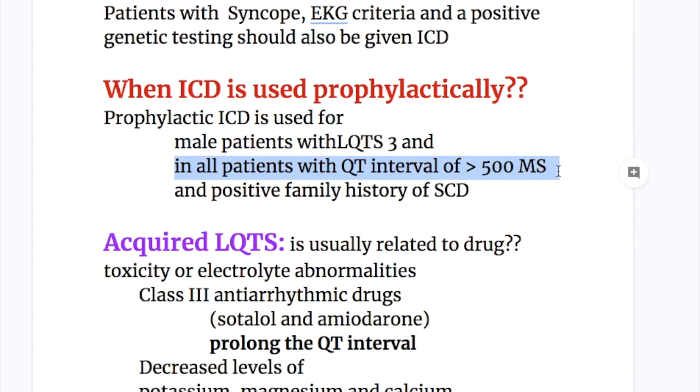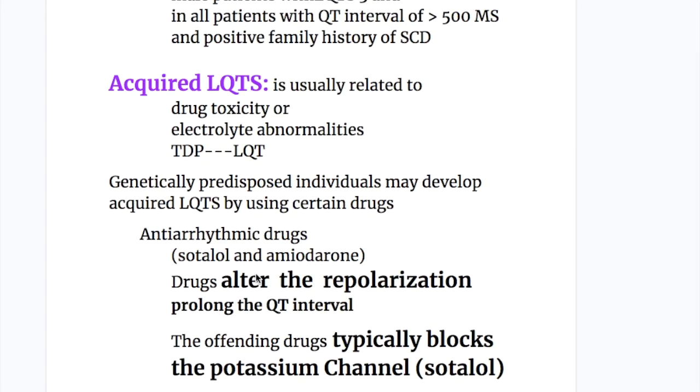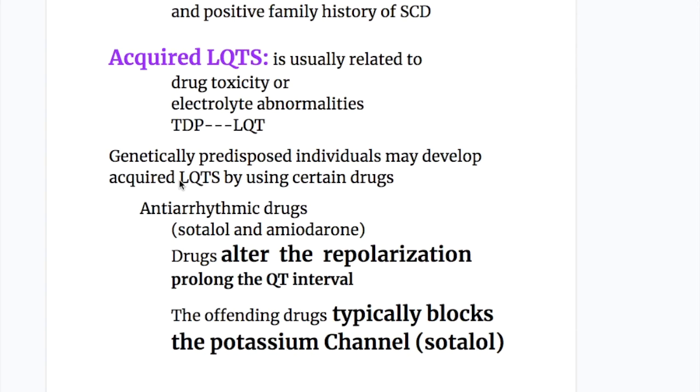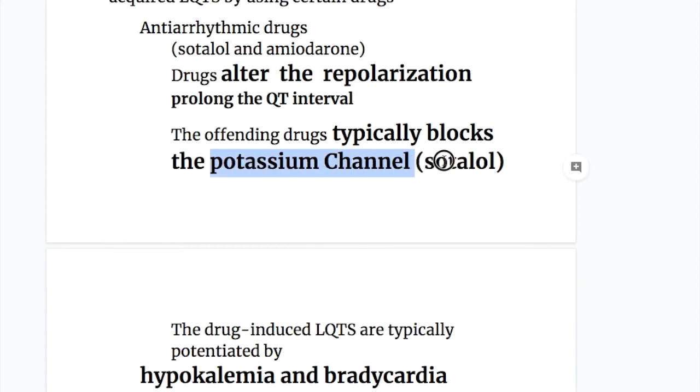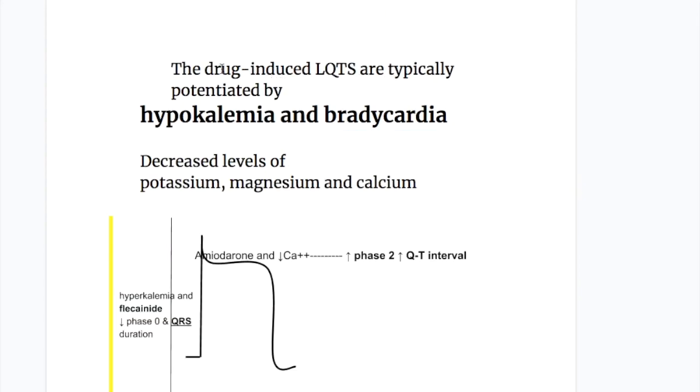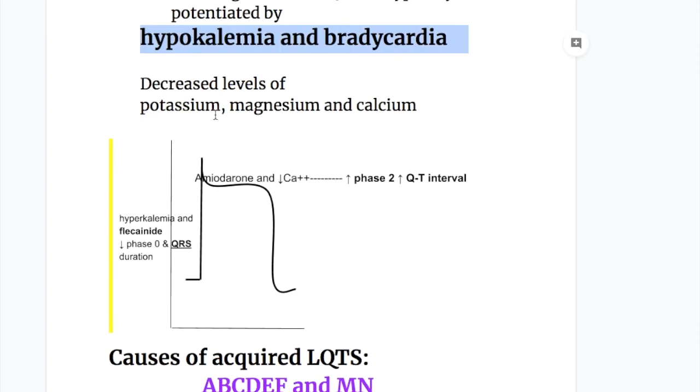Now acquired LQTS - acquired Long QT syndrome. Acquired LQTS is usually related to drug toxicity or electrolyte imbalance that causes torsades de pointes which increases the QT interval. We have a separate video on torsades de pointes. Among the drugs, genetically predisposed individuals may develop acquired LQTS by using certain drugs, especially antiarrhythmic drugs - sotalol and amiodarone. These drugs alter the repolarization process and prolong the QT interval. The offending drug typically blocks the potassium channel as in sotalol. Drug-induced LQTS are typically potentiated by hypokalemia and bradycardia.